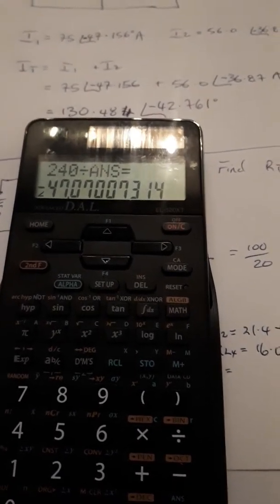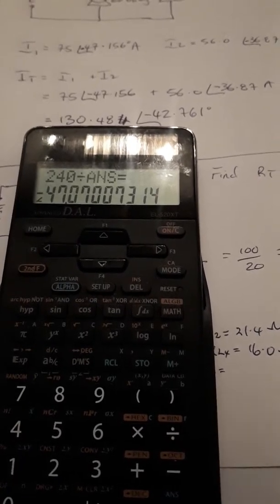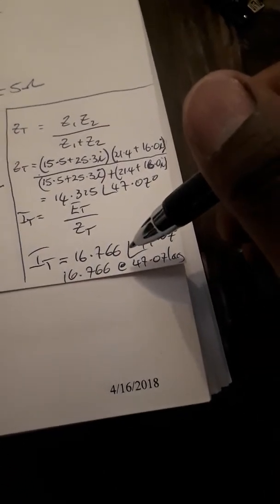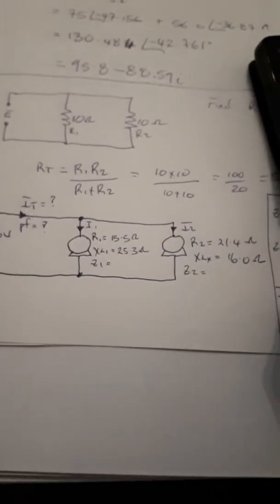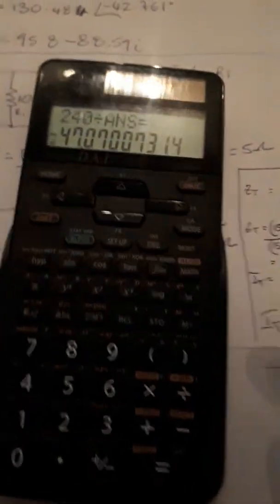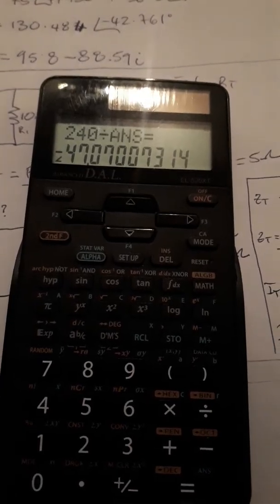So that's saying 16.766 at 47.07 lagging. Because the angle is negative, so it's lagging. It's an inductive circuit as we can see, it's two motors, so it's inductive.